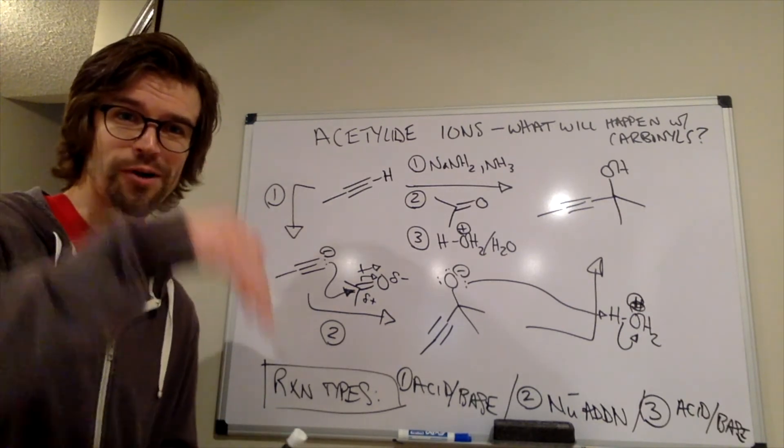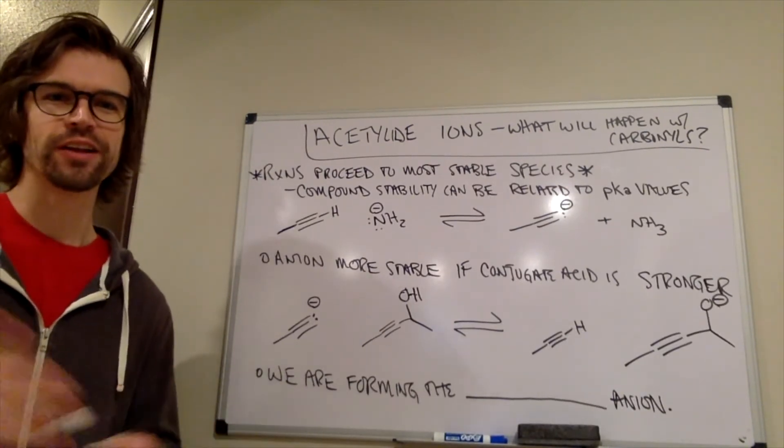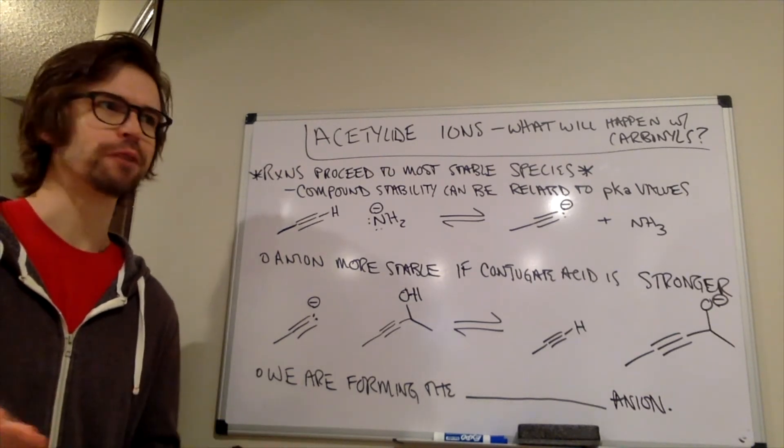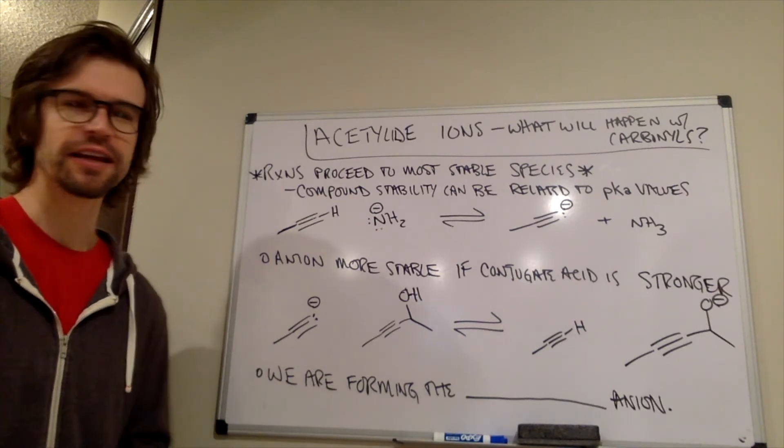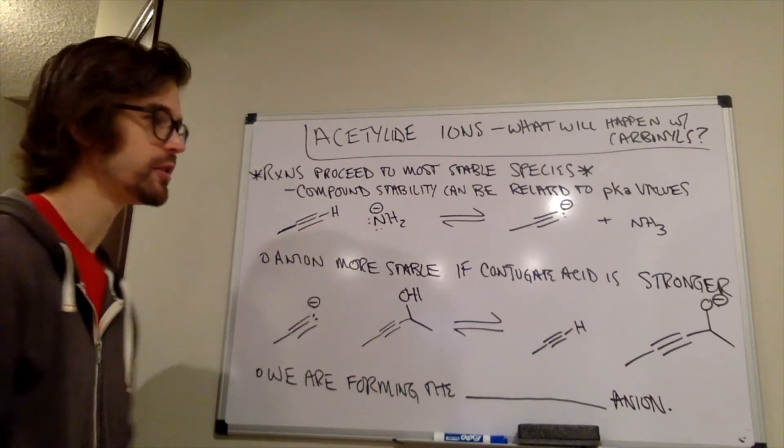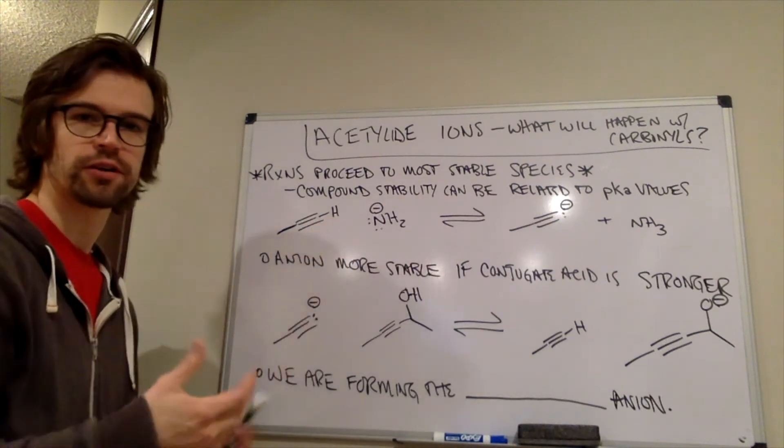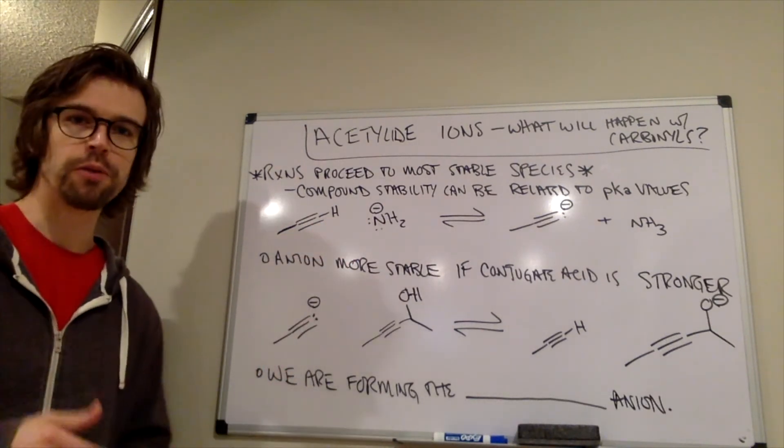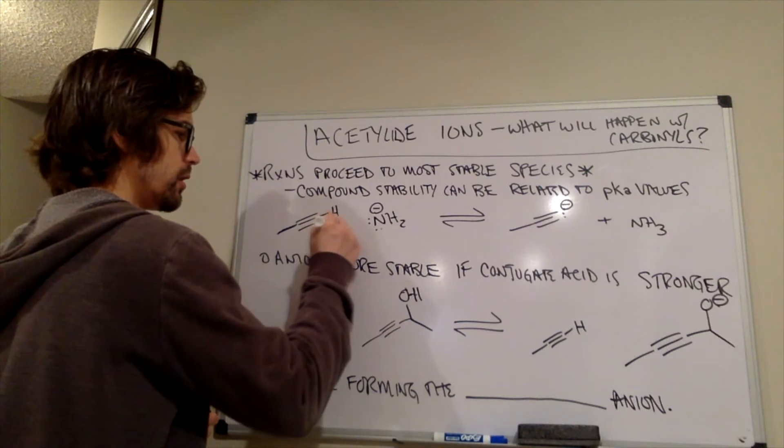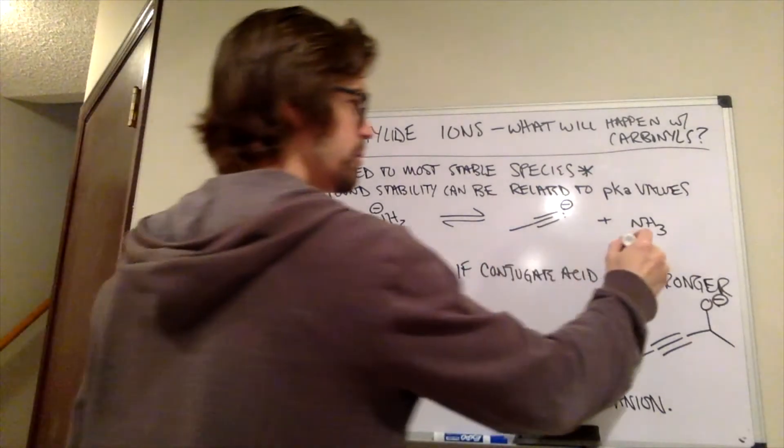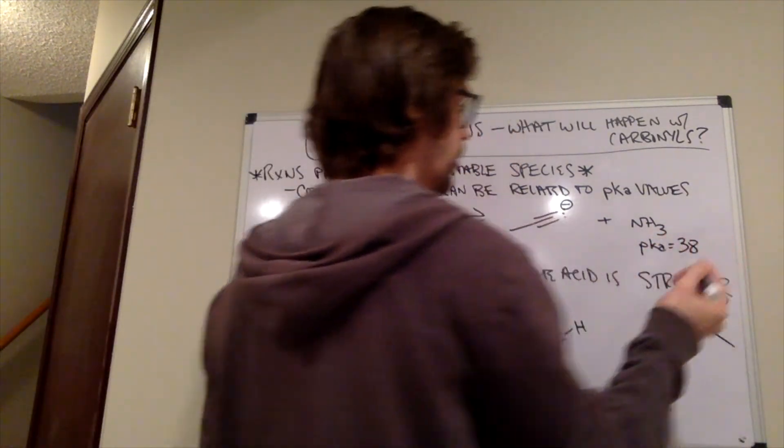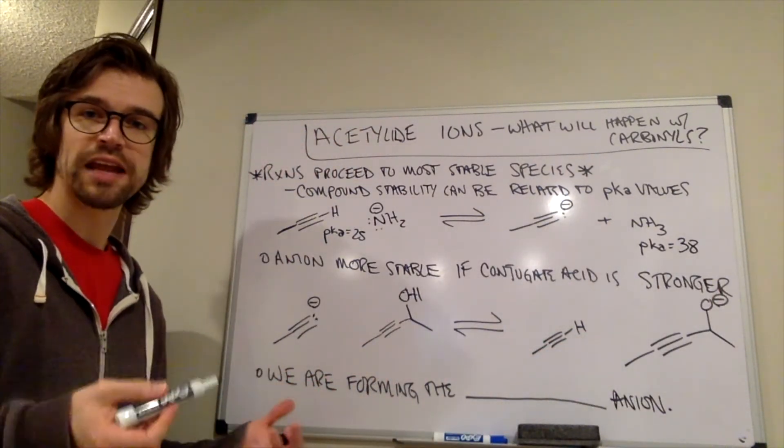So now we're going to move on to, is the ball rolling downhill? All right, is the ball rolling downhill? So how have we thought about this in the past? And a way to kind of ballpark stability is relating it to acid-base chemistry. Reactions proceed to the most stable species and compound stability can be related to pKa values. Which side of this reaction was favored? Something we've kind of talked about just a moment ago, but this kind of goes back to the acid-base chemistry, right? The pKa here of this acid is 25. The pKa of this acid, we just talked about, what is it? Yep, it's 38.